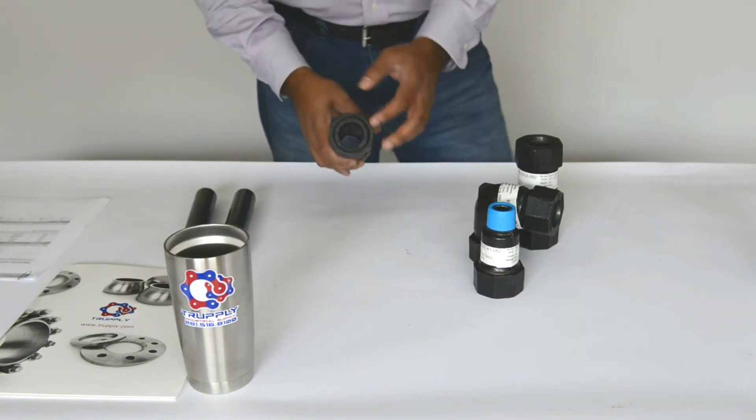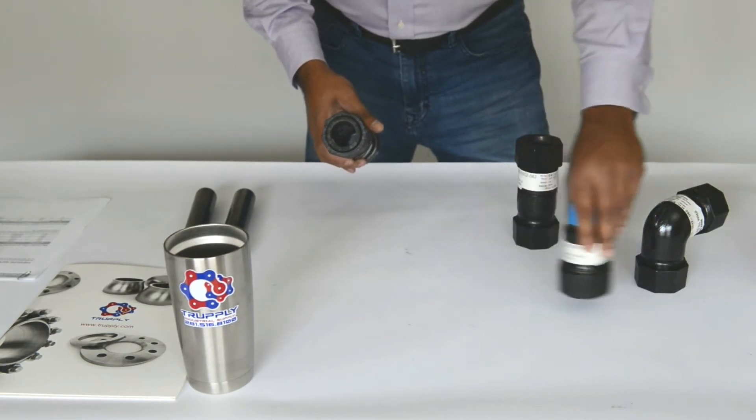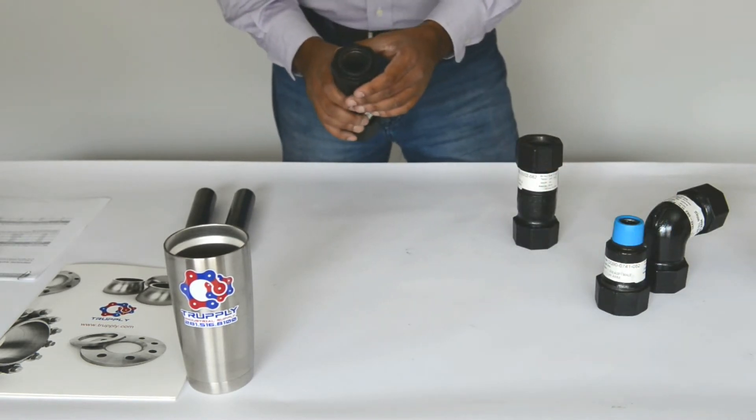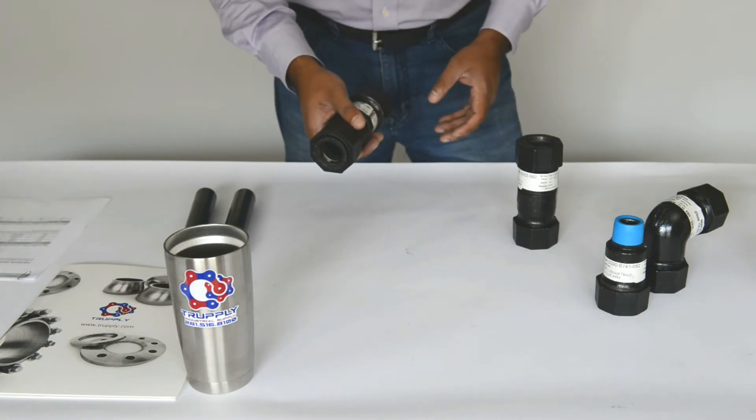Now the main difference between a Style 90 universal coupling and a regular coupling is that a universal coupling has a lock ring. So it prevents the pipe from pulling out.